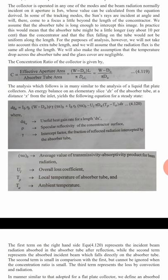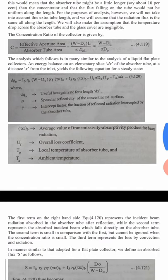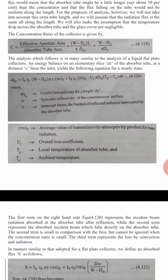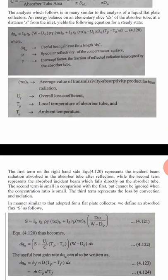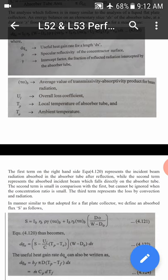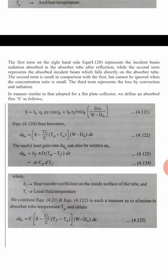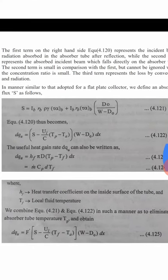In the expression, I_b times r_b with transmittance-absorptance product tau-alpha refers to direct incidence. Rho is the specular reflectivity factor of the concentrator. The first term represents reflected radiation and the second one represents direct beam radiation. Gamma is the intercept factor - the fraction of reflected radiation intercepted by the absorber tube. Tau-alpha is the average transmittance-absorptance product, U_L is the overall loss coefficient, T_p is the local temperature of the absorber tube, and T_a is the ambient temperature.